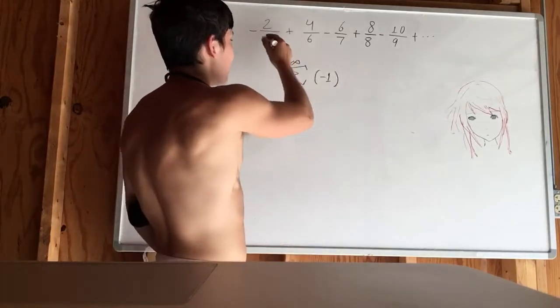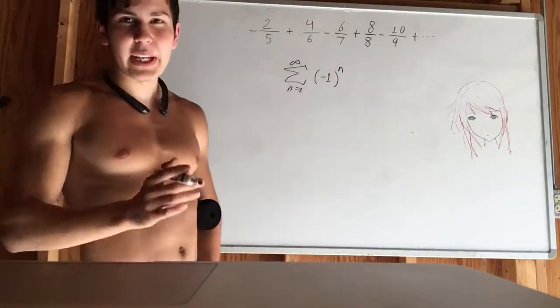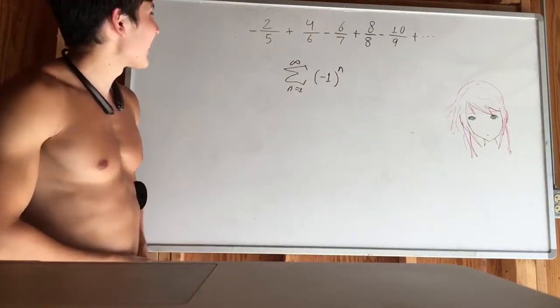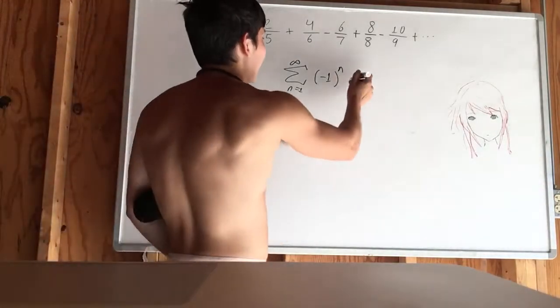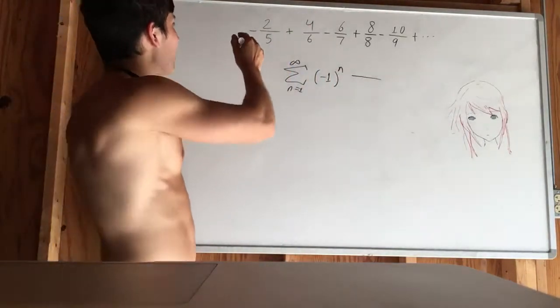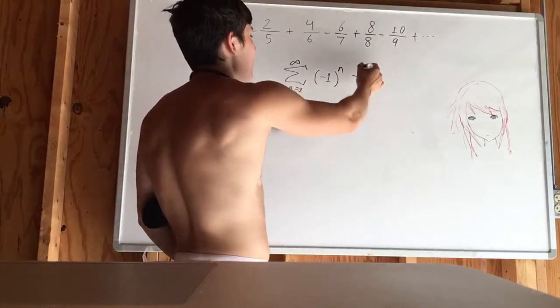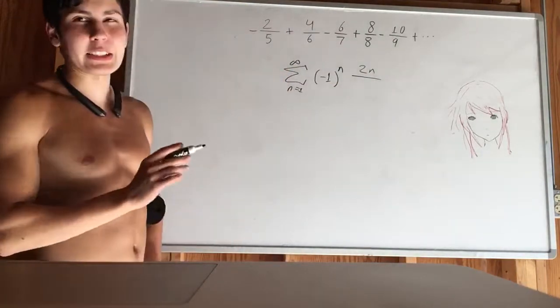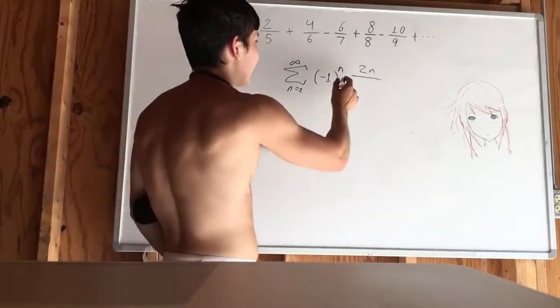Our first term is negative, so we could just have n as opposed to n minus 1 or n plus 1. So that's our first term. We have a fraction. We're moving by 2, so that's 2n. And our first one starts at 2, so that's good. So we could just leave that as a numerator.